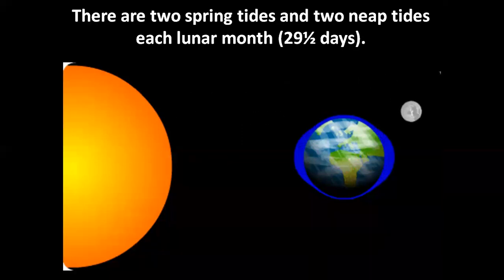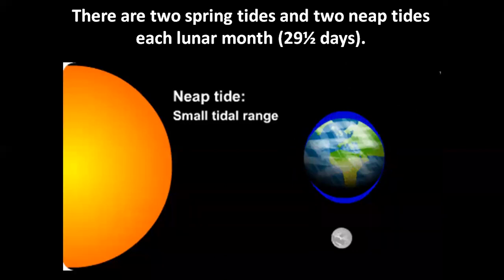There are two spring tides and two neap tides each lunar month. A lunar month is 29 and a half days long.